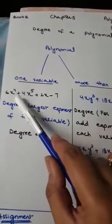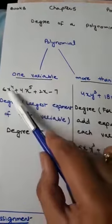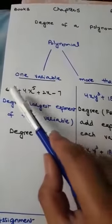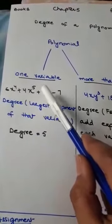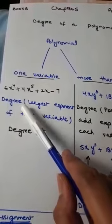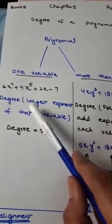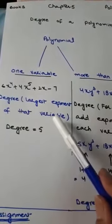Now in this expression we can see only one variable which is x, so this is a polynomial of one variable. In this case the degree is the largest exponent of that variable.